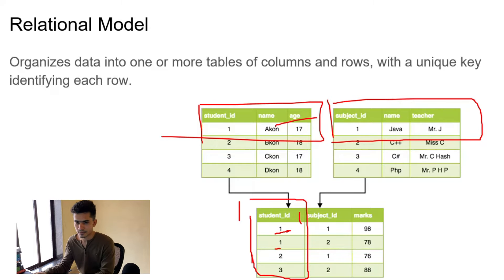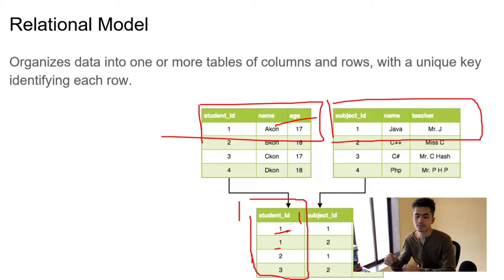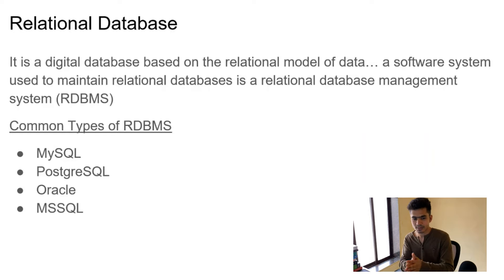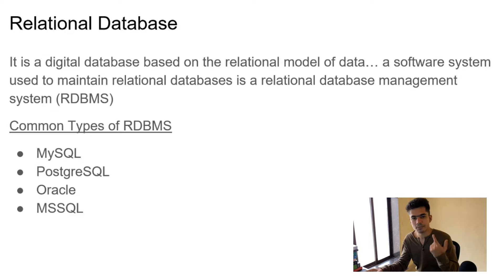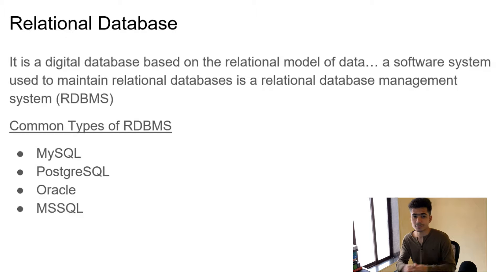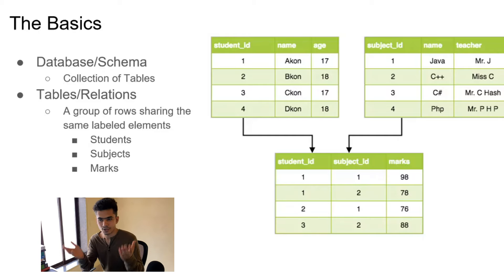We talked about relational data models, which is the structure of how your data looks. Now, a relational database is a software system that maintains different types of data models — generally called a relational database management system, or RDBMS. There are a lot of softwares available such as MySQL, PostgreSQL, MSSQL, and many more. MySQL and PostgreSQL are open source and freely available. We're going to work with PostgreSQL because it's quite easy to learn and has a good user interface with pgAdmin.